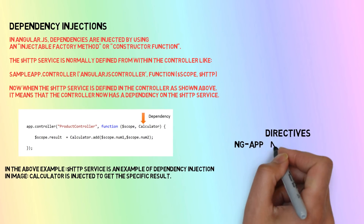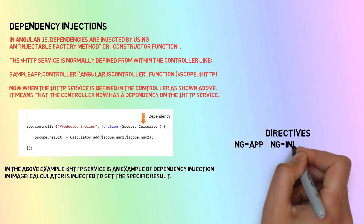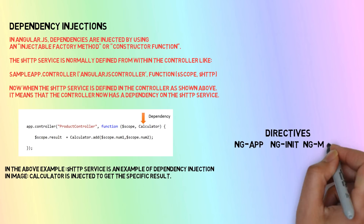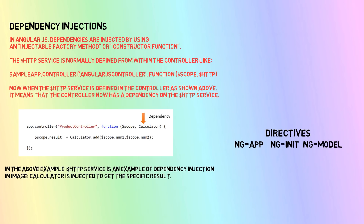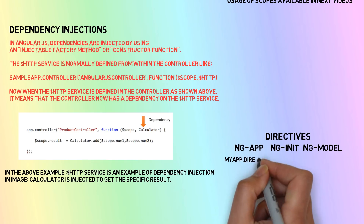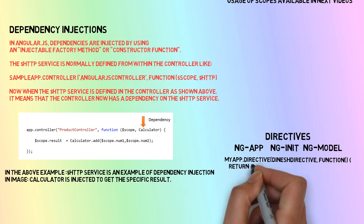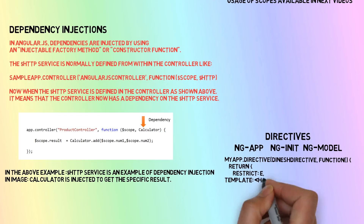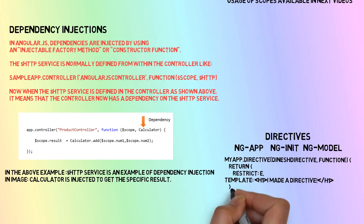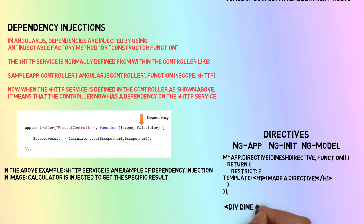AngularJS has a set of built-in directives like ng-app, which initializes the AngularJS application; ng-init, which initializes the application data; and ng-model, which binds HTML controls to the application data. We can also create our own directives. For example, a custom directive named 'Dinesh directive' can be used anywhere in any HTML tag, such as in a div, and it will implement whatever custom logic you write in that directive. These are the overview of the directives.